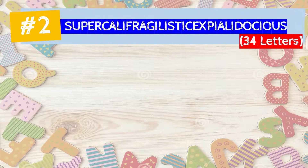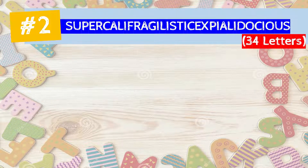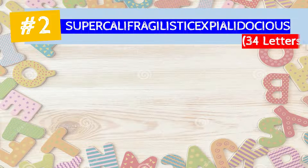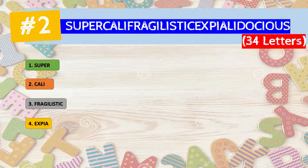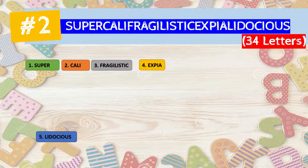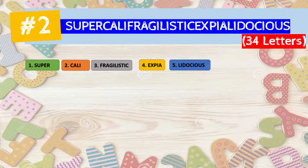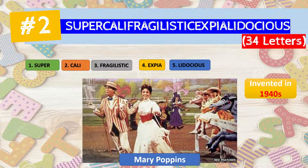Number two is a 34-letter word and the second longest on our list. It is called 'supercalifragilisticexpialidocious.' This is a long word and can be hard to pronounce, so we can break it into different parts: super — cali — fragilistic — expiali — docious. This word was invented in the 1940s and was made popular by the film called Mary Poppins.